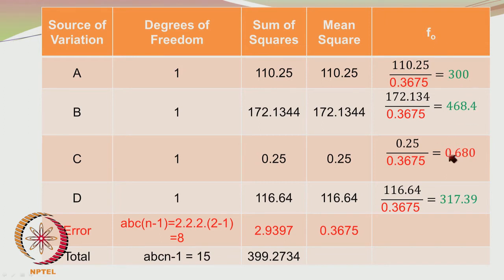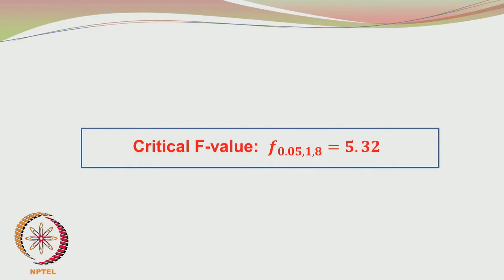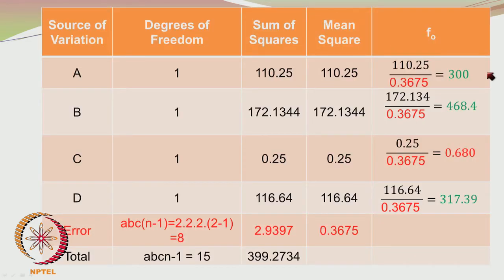Except for C, all other F values are pretty high. The critical F value, choosing a level of significance of 0.05 with 1 numerator degree of freedom and 8 denominator degrees of freedom, is 5.32. You compare the actual F value with the critical F value to see whether the F value exceeds the critical value. So 300 is obviously greater than 5.32.